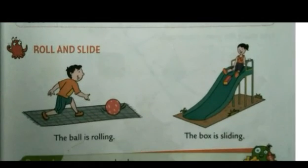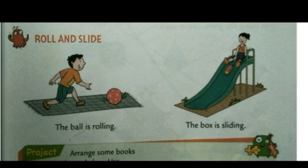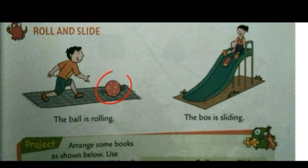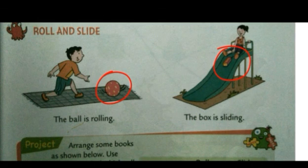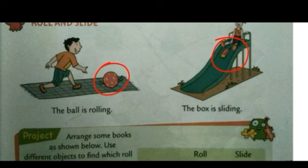Now see the next topic — Roll and Slide. What is the meaning of roll and slide? See the picture given here — the ball is rolling. When you throw the ball on the floor, the ball is rolling. See the next picture — the girl has thrown the box and it is sliding. This is the difference between rolling and sliding. A box cannot roll — the ball rolls on the floor when you throw it, and the box slides.